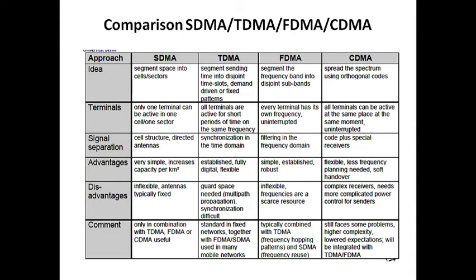FDMA's idea is to segment the frequency band — it tunes to the frequency of the receiver accordingly. CDMA spreads the spectrum using orthogonal codes. A separate code is defined to transmit data from source to destination without collision, and that code is known only to the source and destination — no other mobile station can access it.